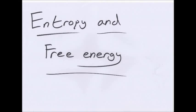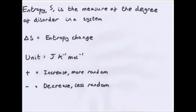Hello and welcome to my next video on entropy and free energy. Entropy S is the measure of the degree of disorder in a system. Delta S means entropy change. The unit of entropy is the joule per Kelvin minus one per mole minus one.